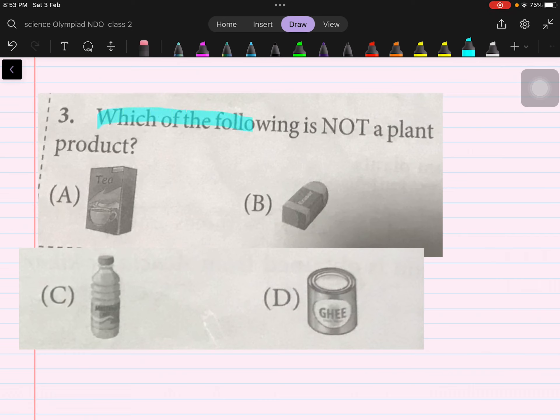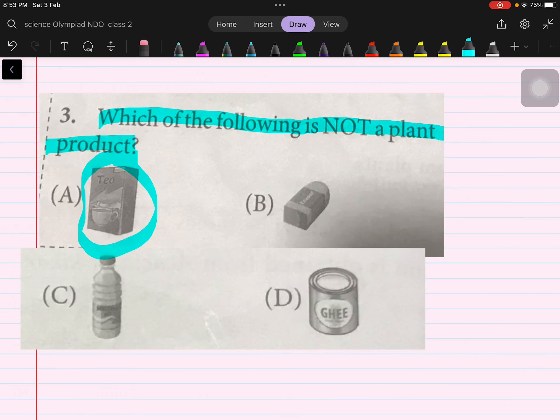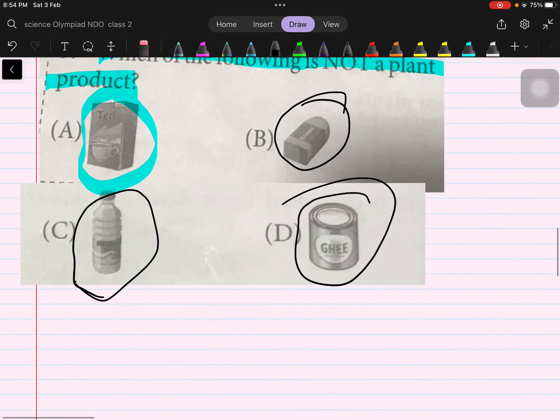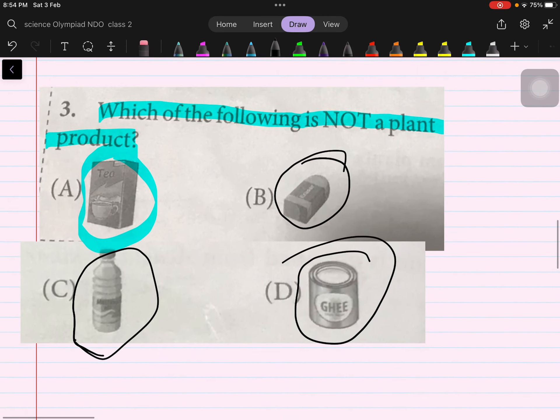Which of the following is not a plant product? Tea is a plant product. Eraser is also a plant product. Mustard oil also. Ghee is not a plant product because it's an animal product. So we will bubble D.